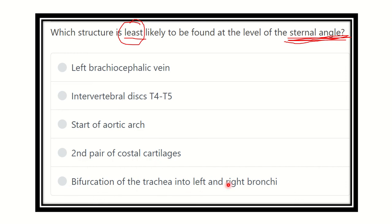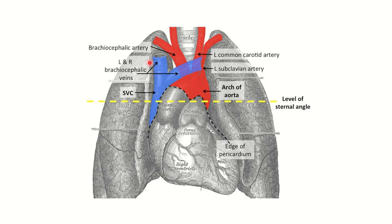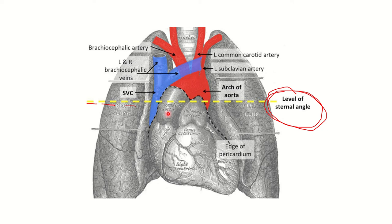Let's identify the external angle on the diagram. This yellow dot marks the level of the external angle. At this level we can see the ascending aorta terminates here, the arch of aorta begins here, and the pulmonary artery bifurcates into the two pulmonary arteries. We can also see the superior vena cava. The brachycephalic vein is visible, but note that it is not located at this level.